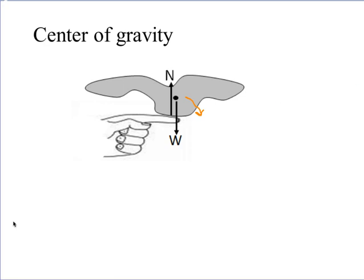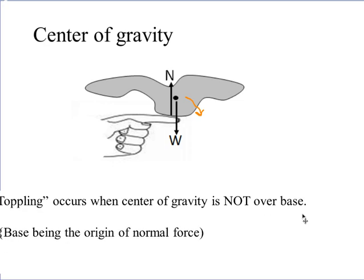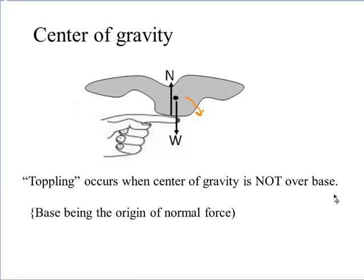In general, toppling occurs if the center of gravity is not over the base. If you moved your finger over so it was under the center of gravity, then you could balance this thing on your finger. And, there are many exercises that we will do with that that are all good exercises.